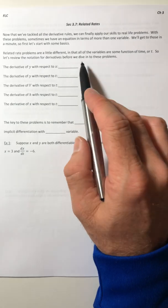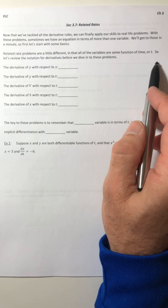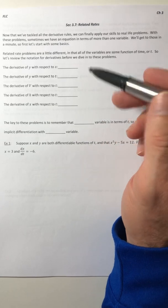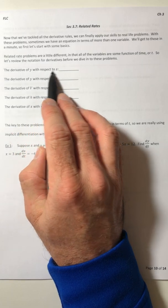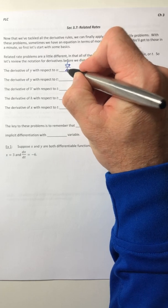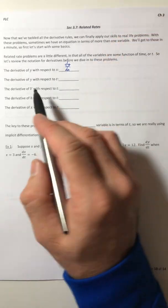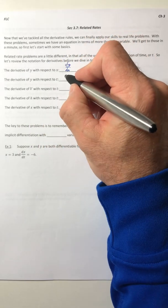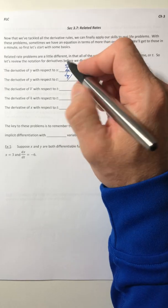First, let's start with some basics. These related rate problems are a little different in that all of the variables are some function of time, or t. So let's review the notation for derivatives before we get into these problems. First, what was the notation for the derivative of y with respect to x? Well, that was dy/dx. You could also use y prime, but let's stick with dy/dx. So what would the derivative of y with respect to t be denoted as? Well, still the derivative of y, so that would still have to be on top, but the denominator, since it's with respect to t, would have to be dt.